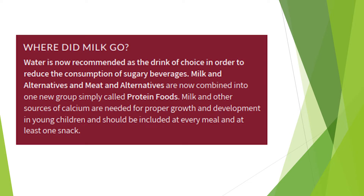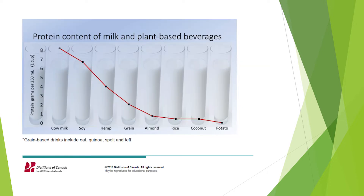So where did milk go? Milk and alternatives are included in the Protein Foods group on the New Food Guide. Milk remains a very important source of calcium, vitamin D, fat, and calories for appropriate growth and development. Plant-based beverages such as soy, rice, pea, almond, and coconut are not recommended for anyone under two years of age, as these beverages often lack adequate protein and fat, calcium, and vitamin D. Infants require breast milk or infant formula for appropriate growth and development. At about 9 to 12 months, whole cow's milk may be introduced. After two years of age, children may still be consuming human milk as expressed breast milk, and they can be offered skim, 1%, or 2% cow's milk or unflavoured fortified soy beverage.